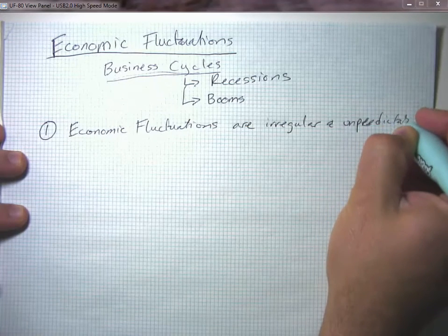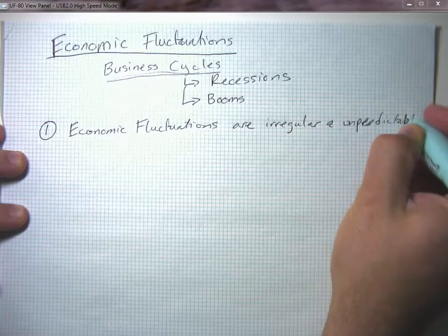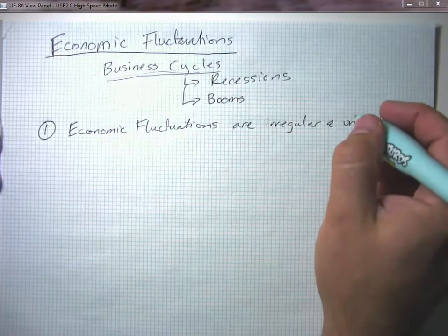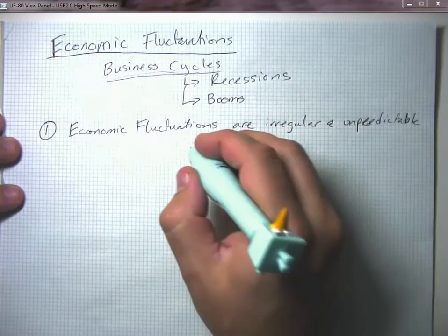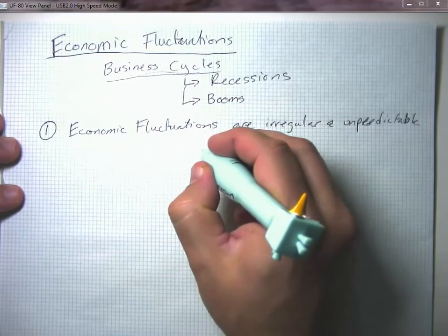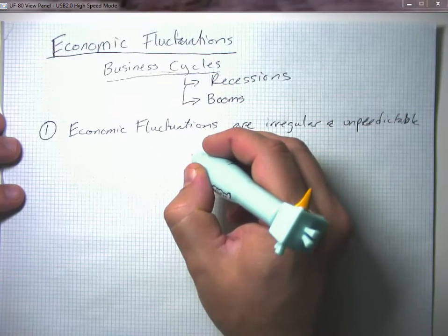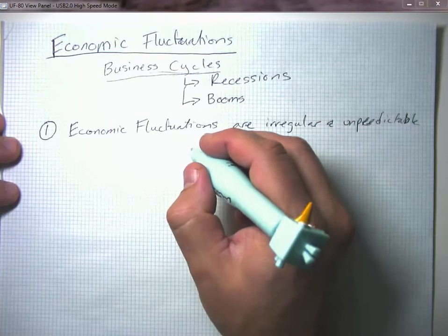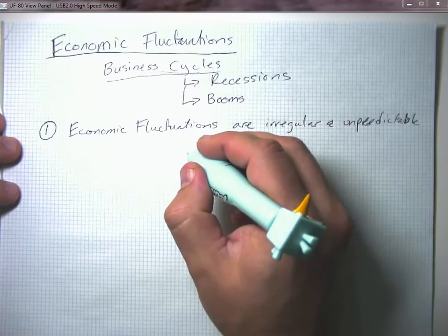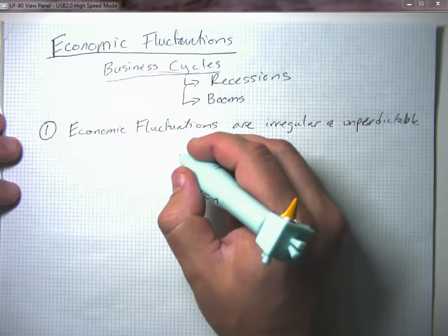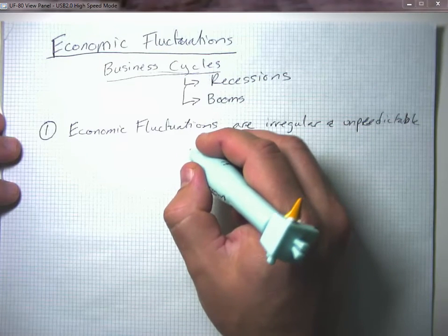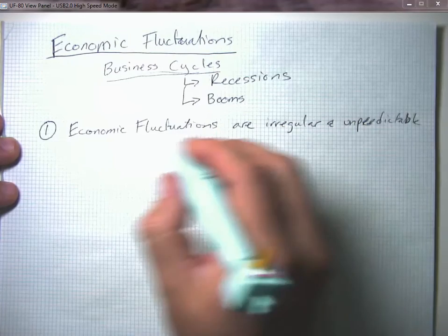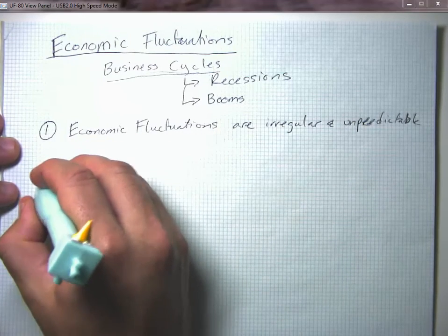One way of thinking about this is: how long is it typically between recessions? Sometimes recessions come very far apart — as long as eight or nine years — sometimes four or five years, and sometimes they can quickly follow one another, giving us what's called a double-dip recession.